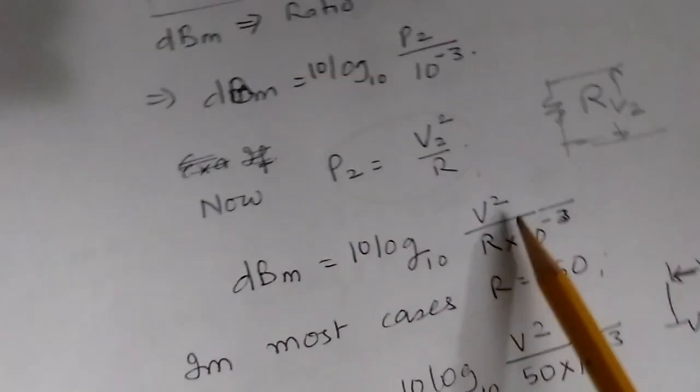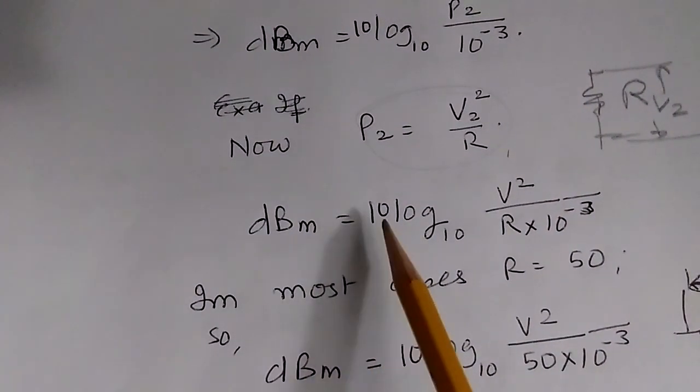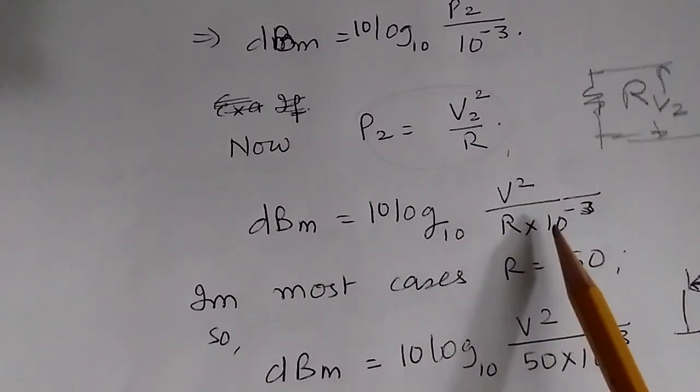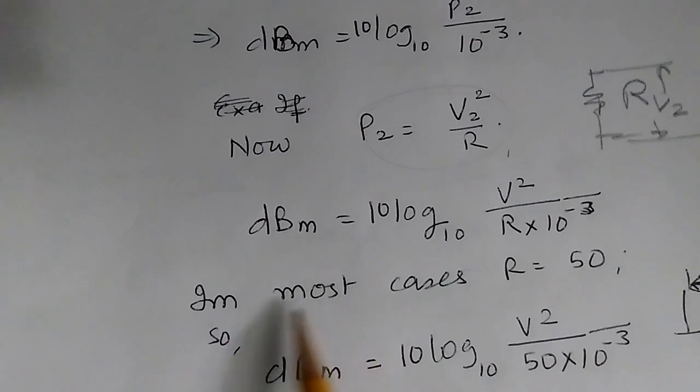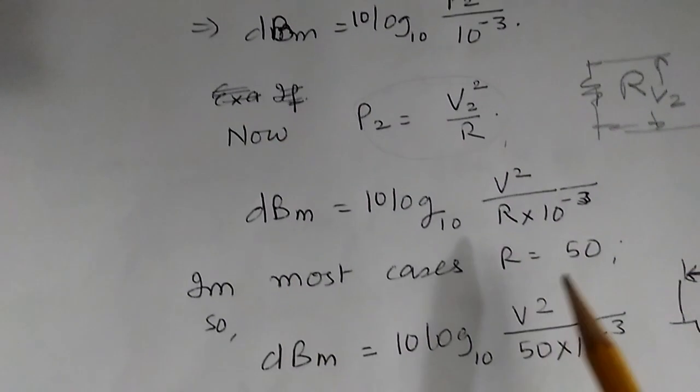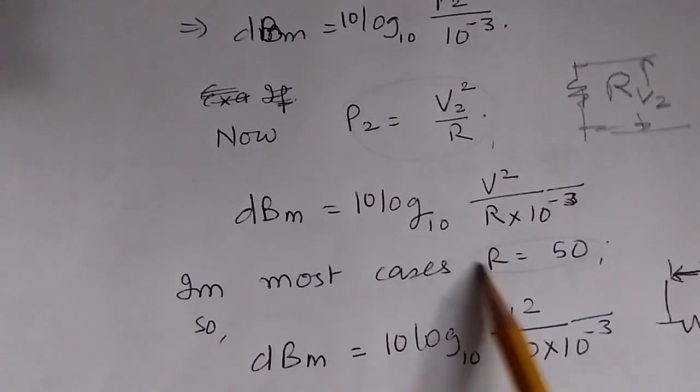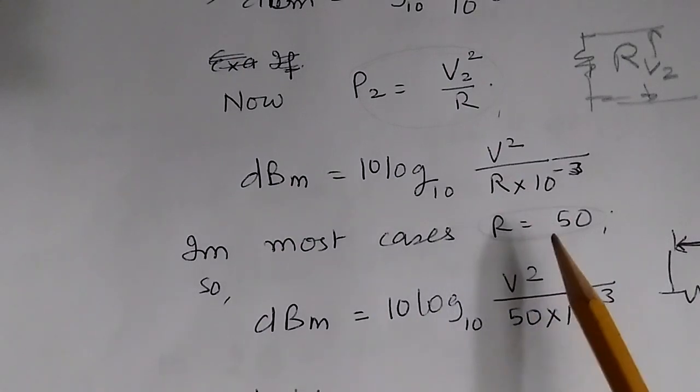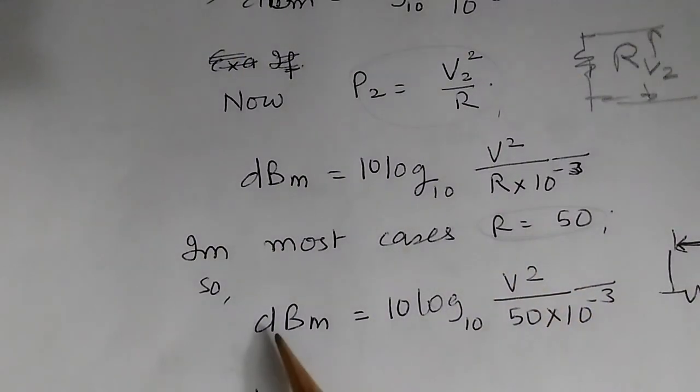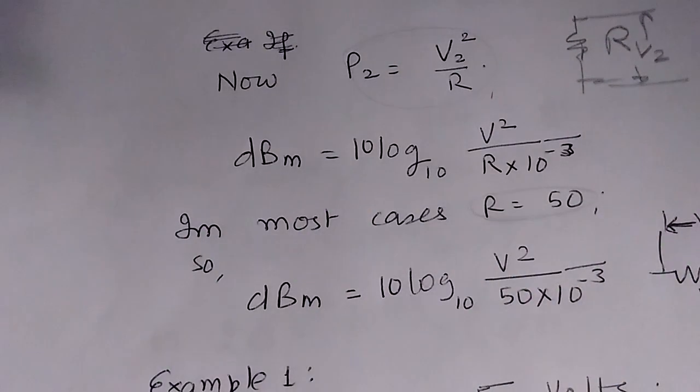The relationship between voltage and dBm becomes dBm = 10 log₁₀(V² / R × 10⁻³). In most cases, especially in RF circuits, this resistance R is 50 ohms. It's like a 50 ohm load. In that case, dBm = 10 log₁₀(V² / (50 × 10⁻³)).